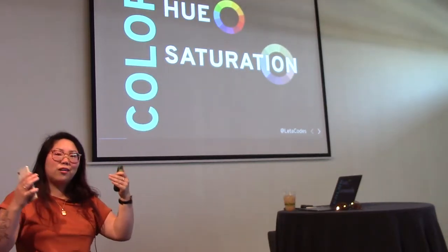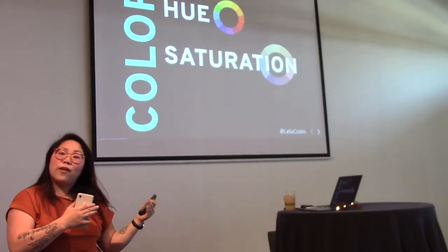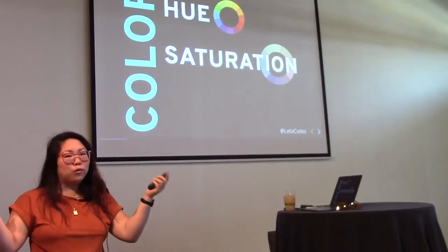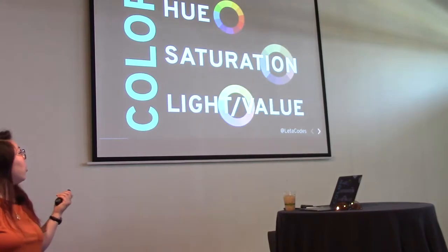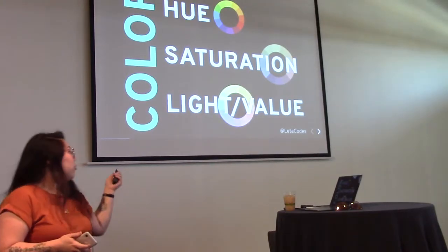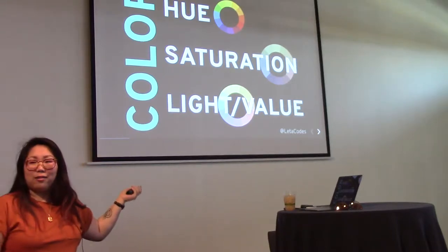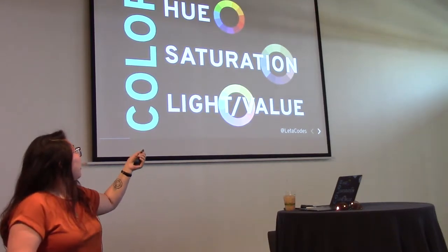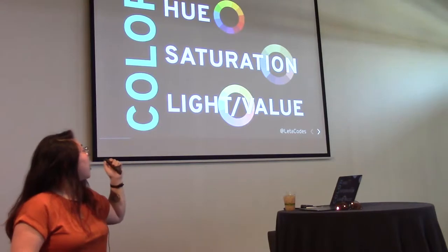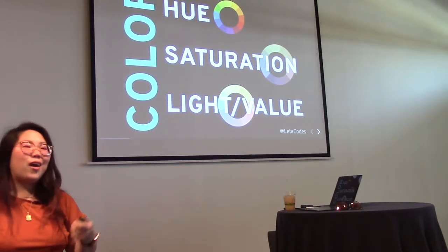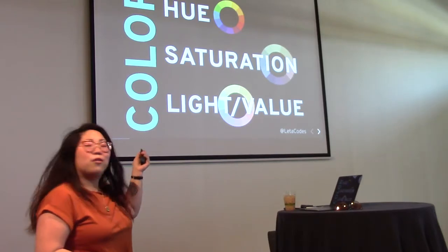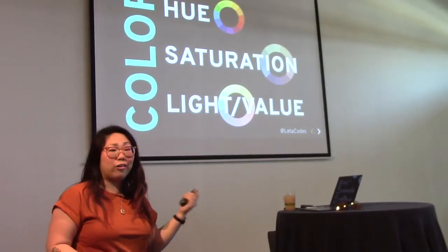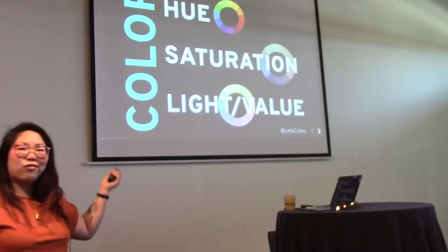We also have saturation. Every color, if you desaturate it — pull out the brightness, the boldness of that color — they'll eventually all turn into various shades of gray. So saturation is anywhere from gray to the brightest, bold, pure version of that hue. We also have light or value. These are created when you add white or black to each of the colors. When you add white, it's a tint. When you add black, it's a tone. So for example, if you take the hue red and add white, you get pink; you add black, you get a maroon color. Some of you designers might recognize HSL or HSV — those are different ways of writing out color codes. Hue, saturation, and light, or value.